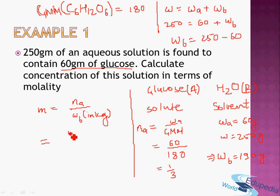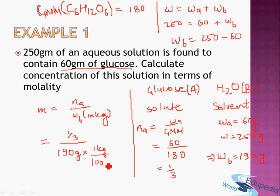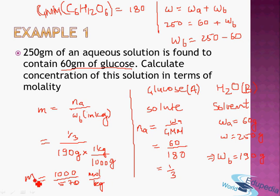So the molality is 1000/570 mole per kilogram. We converted 190 grams to kilograms by dividing by 1000, giving 0.190 kg. The final calculation is (1/3) ÷ 0.190 = 1000/570. You can divide to get the exact decimal value. This is the molality of the glucose solution. Let's see another example to make things clearer.